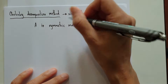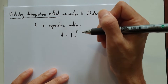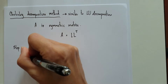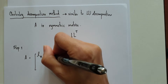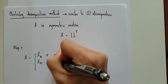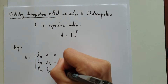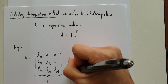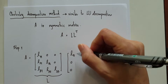So if A is a symmetric matrix, we will decompose A into L times L-transpose. In the first step of Cholesky, matrix A equals matrix L — which is the lower triangular matrix with entries L11, L21, L22, L31, L32, L33 — multiplied with L-transpose.